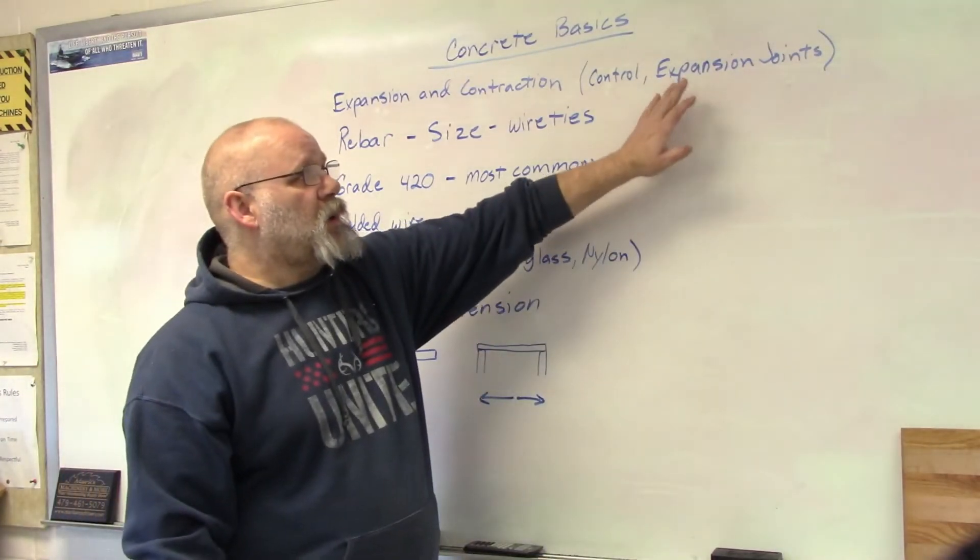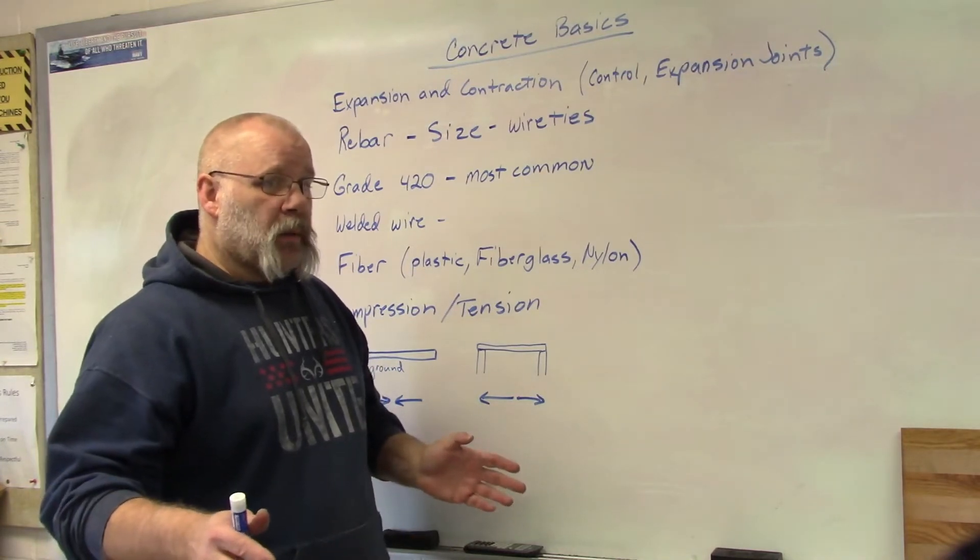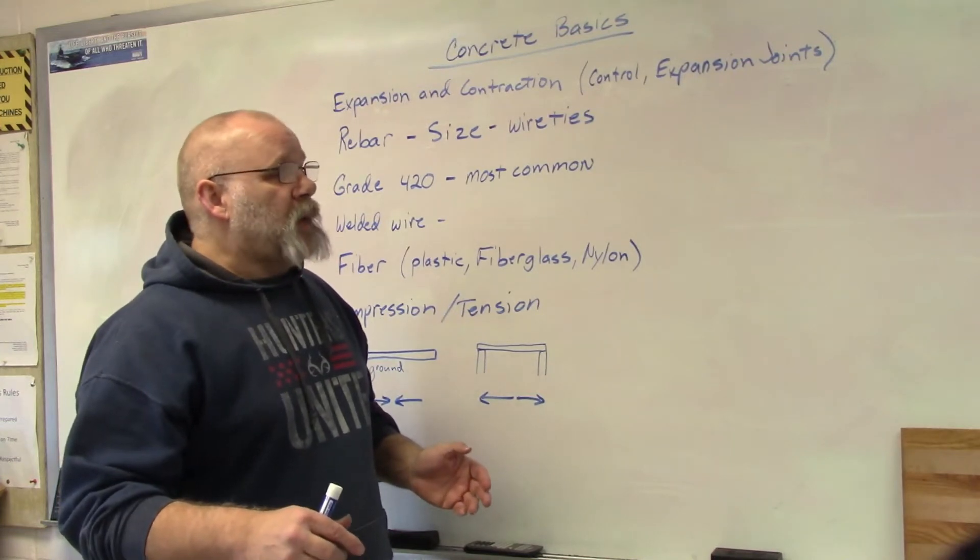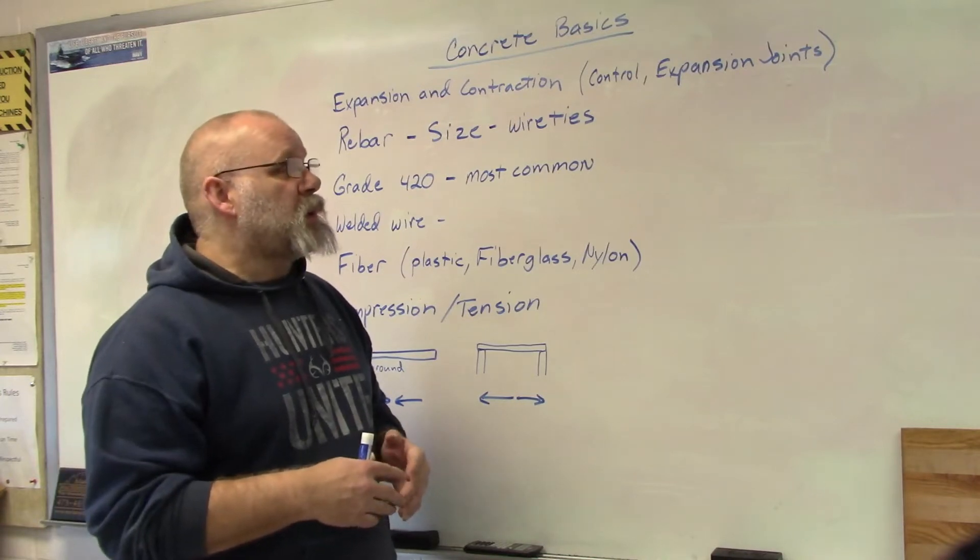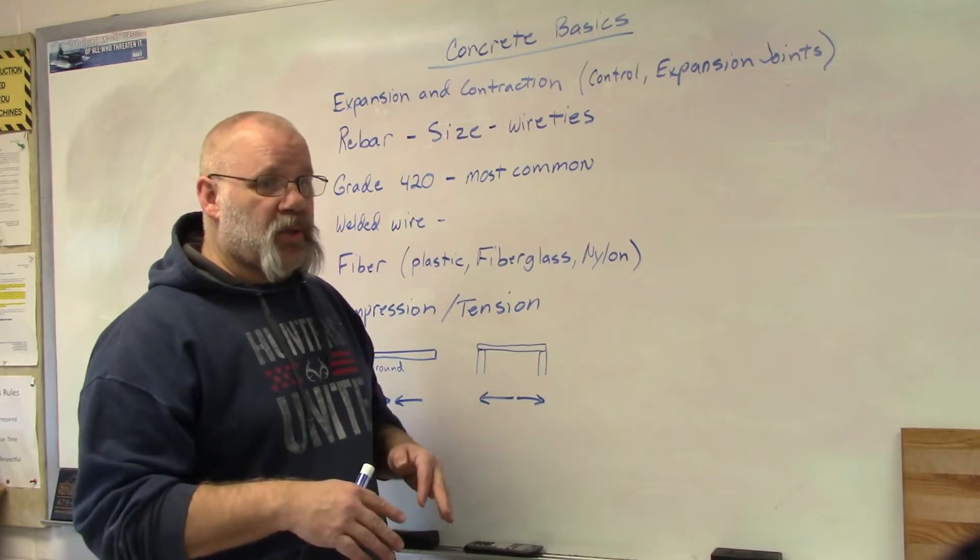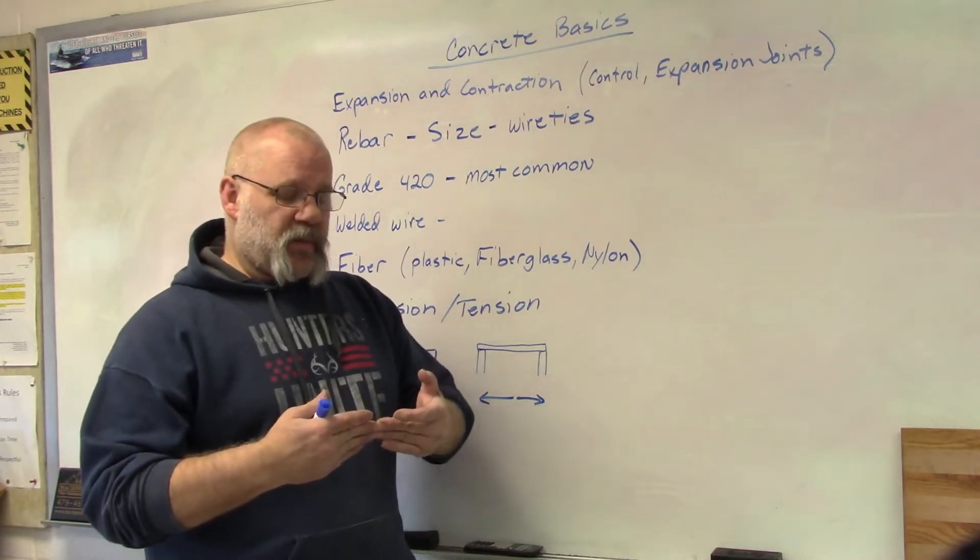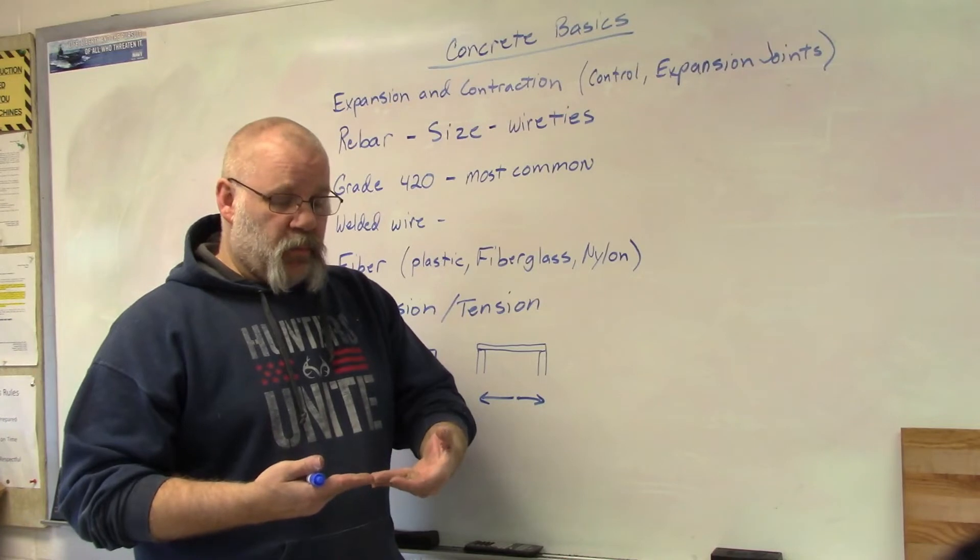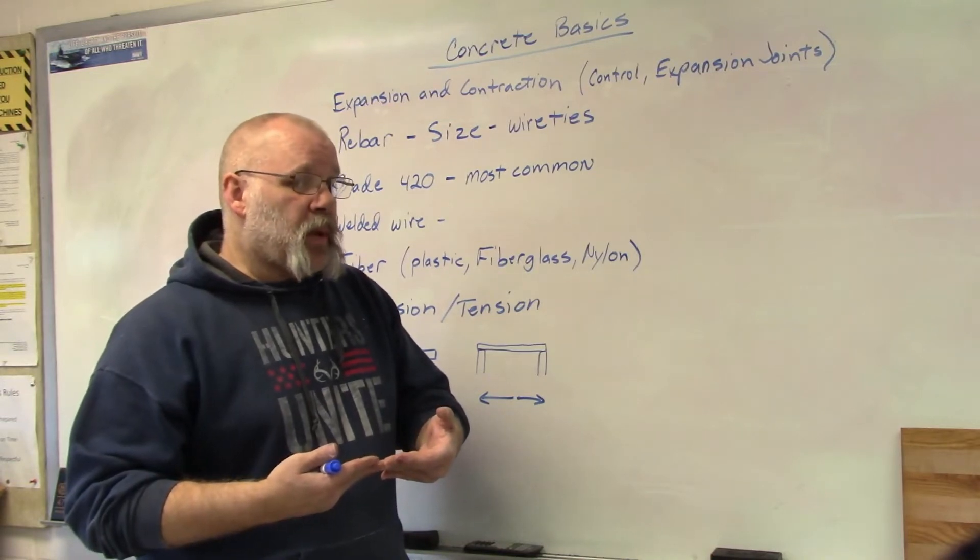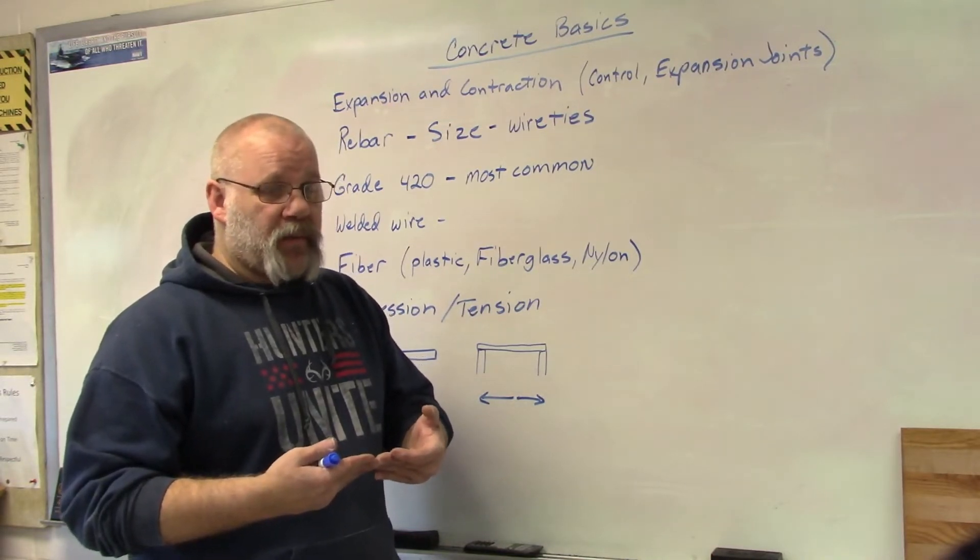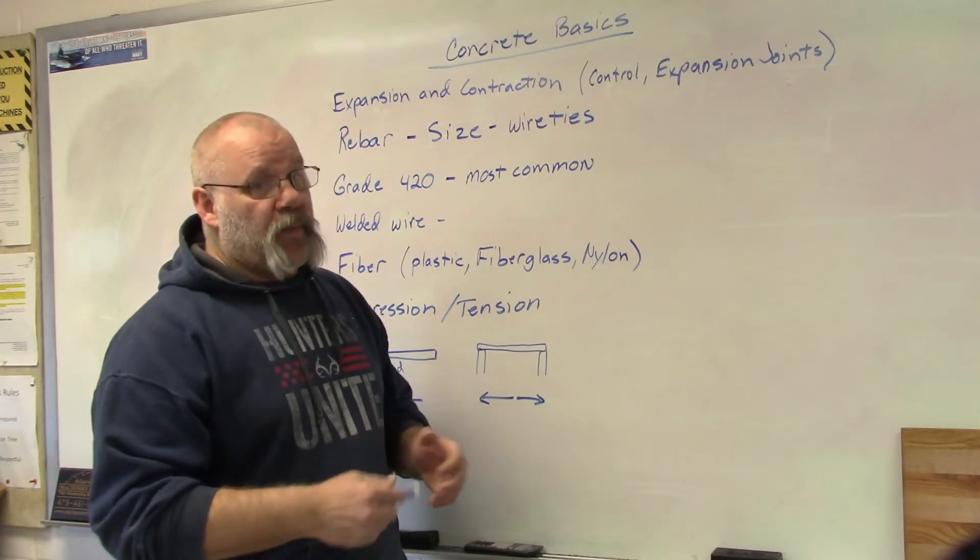The other one is what they call an expansion joint. If you place a large pour, a large area of concrete, that when it gets, if it's outside where it gets really hot or really cold, during the summertime it's going to expand a lot or in the wintertime it's going to shrink a lot. So you have to put expansion joints in there. If you put two pours really right up against the other and they don't have anywhere to expand, the crack where they meet is going to buckle.